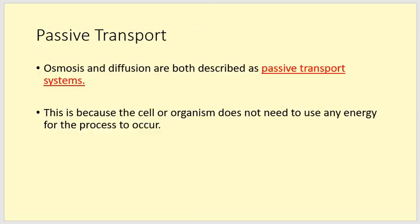Now, both osmosis and diffusion are described as passive transport systems. This is because the cell or organism doesn't need to use any energy for the process to occur. The process occurs simply because there is a difference in concentration and they call that difference in concentrations a concentration gradient and that is all that is required. No energy input, just maintaining the difference in concentrations.